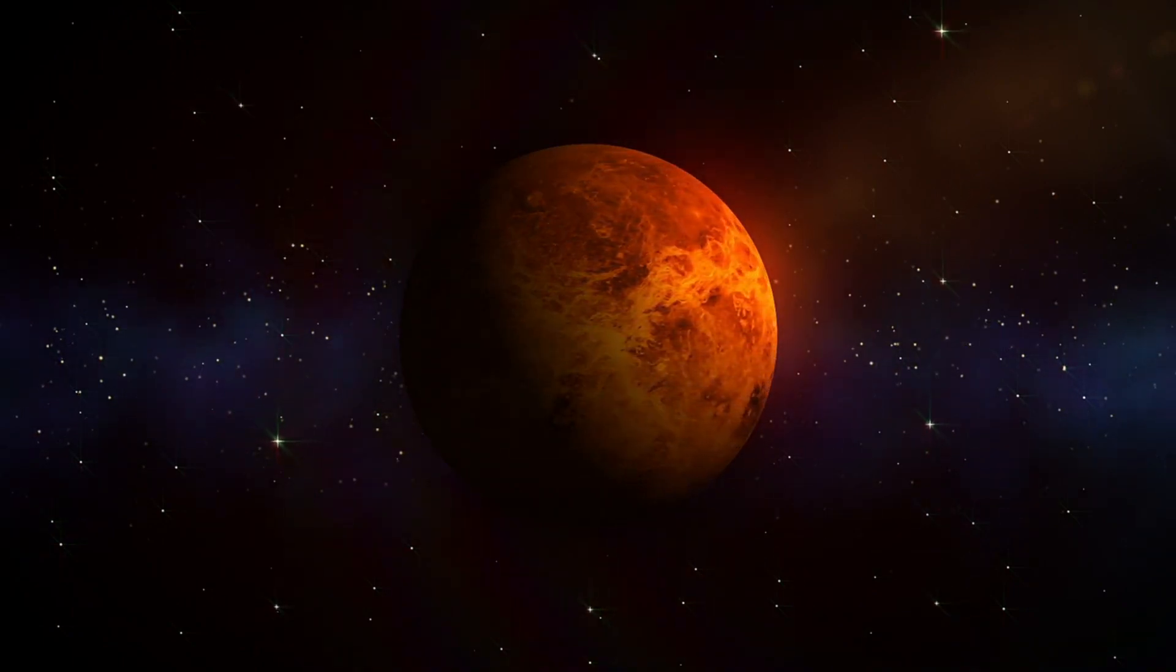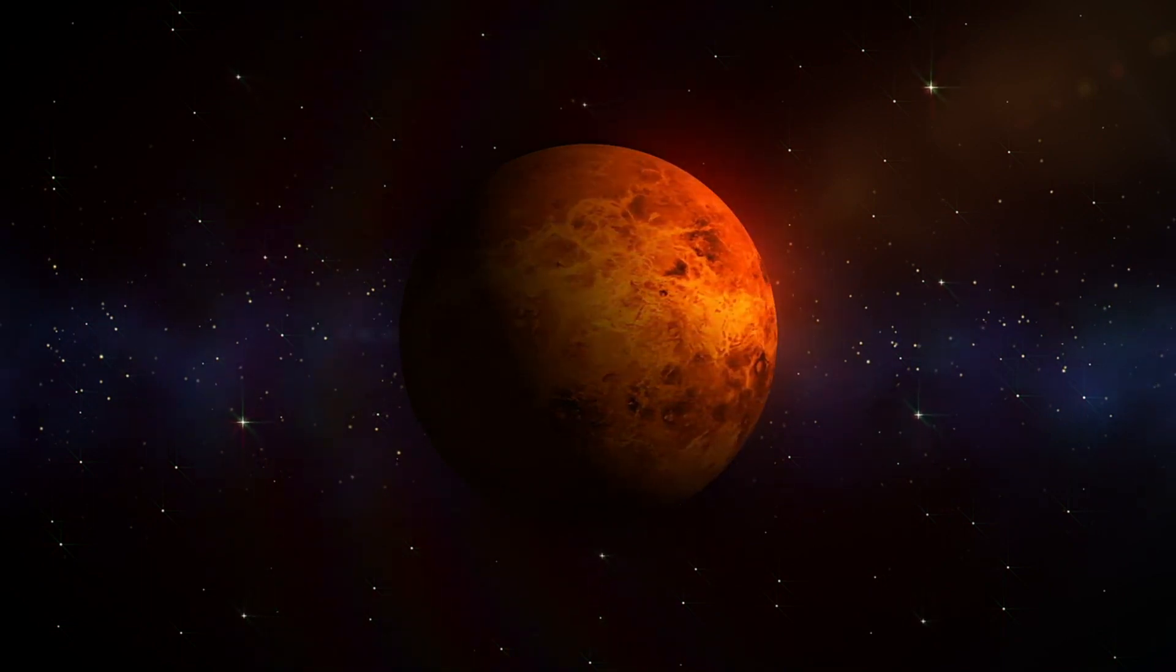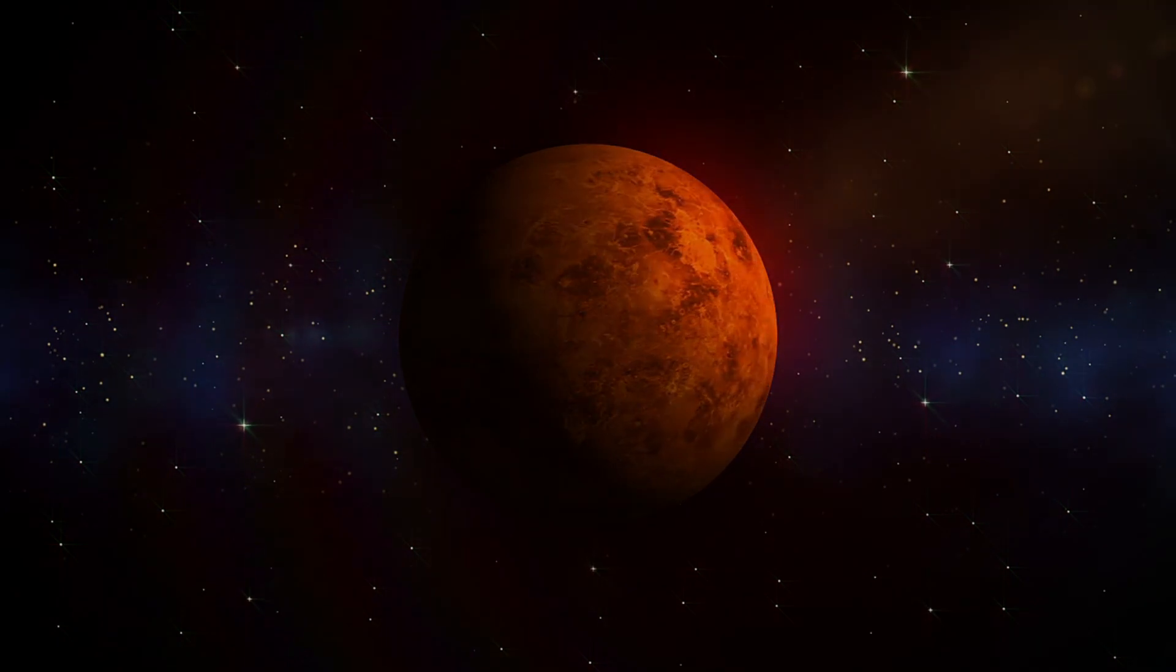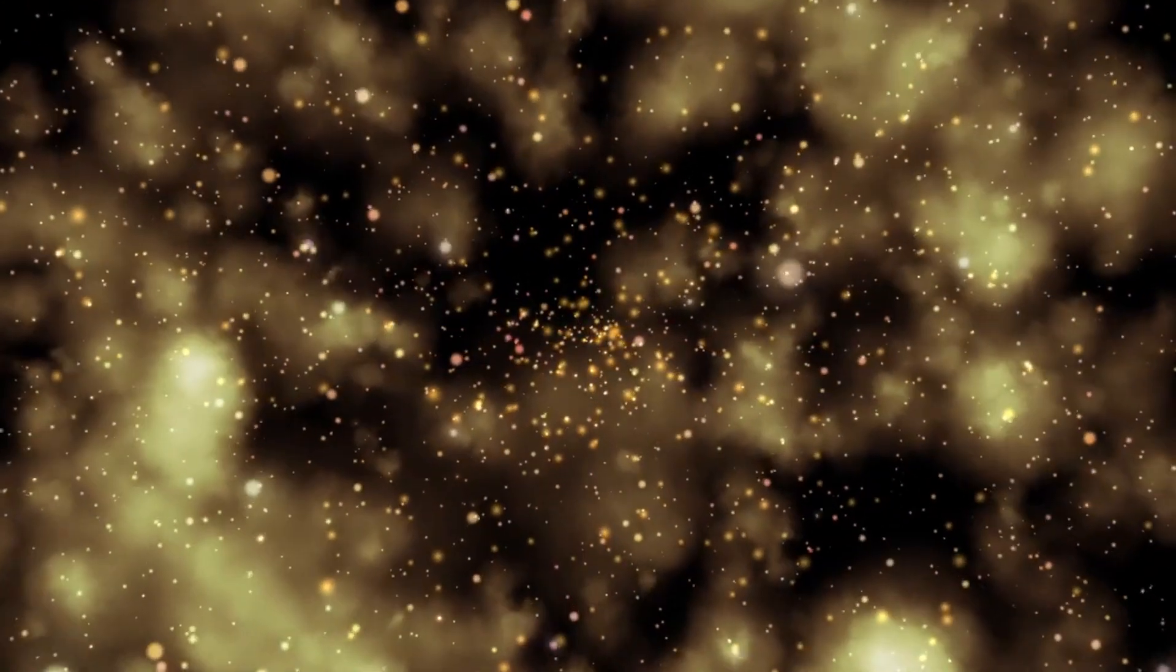In summary, if the sun exploded, it would be catastrophic for all life on Earth. The explosion would release a tremendous amount of energy, causing a shockwave that would wipe out everything in its path. The resulting radiation and heat would also be deadly, making it impossible for any living organisms to survive.